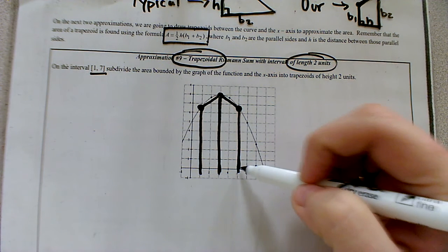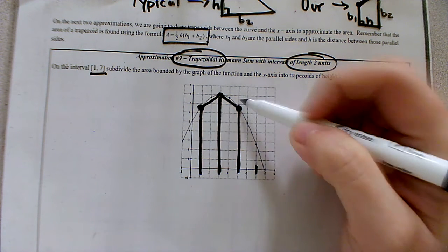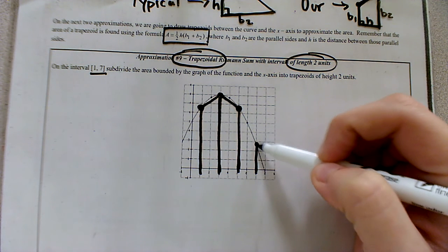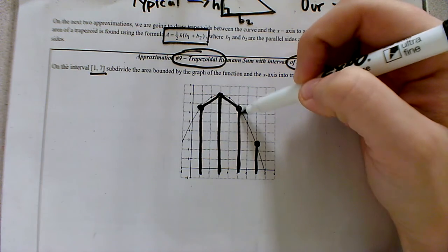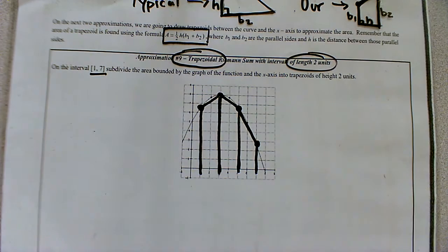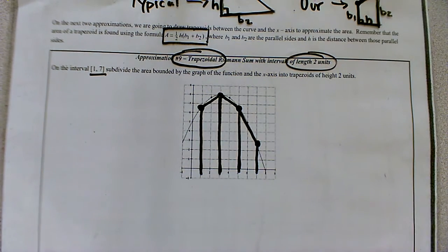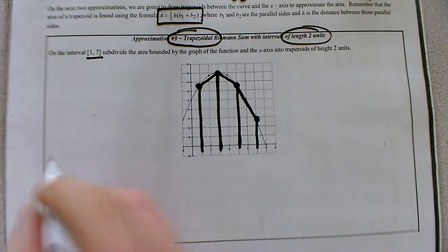All right, in our last trapezoid from five to seven, you already traced up five. So now we're going to trace up from seven and connect the dots. So it looks like we have three trapezoids to calculate the area of.